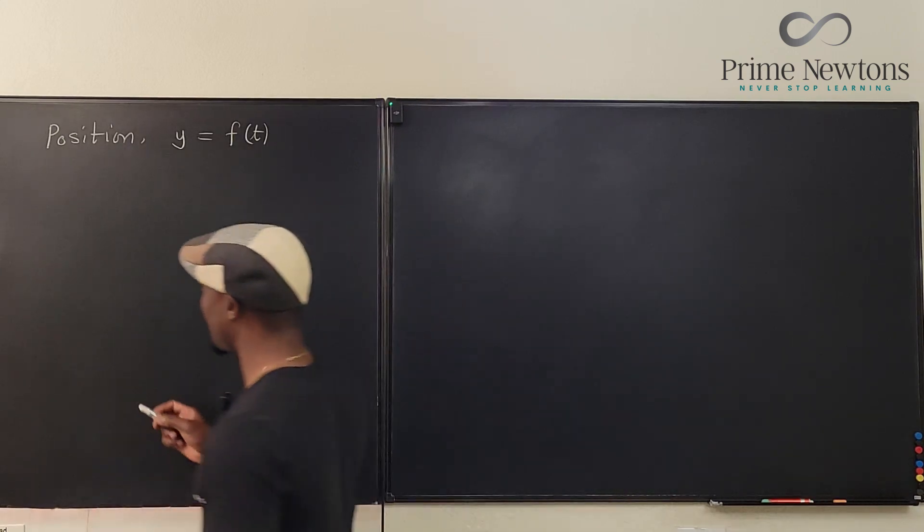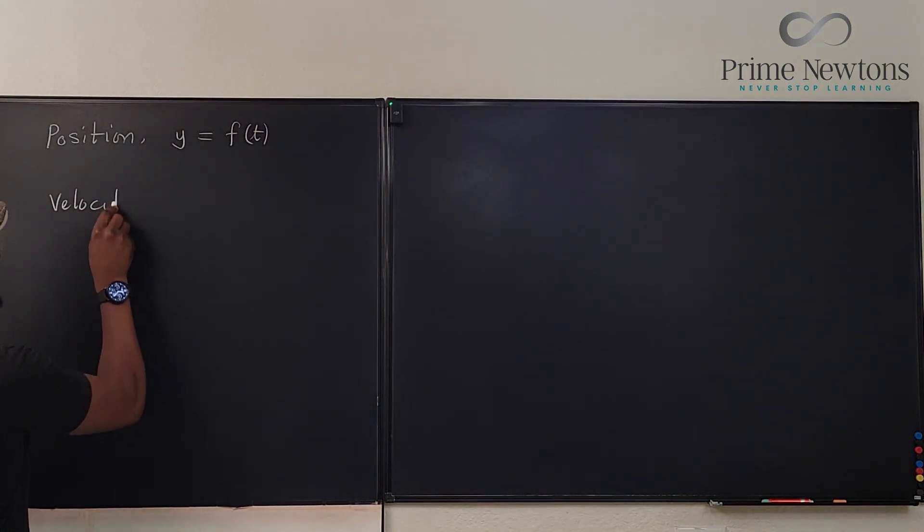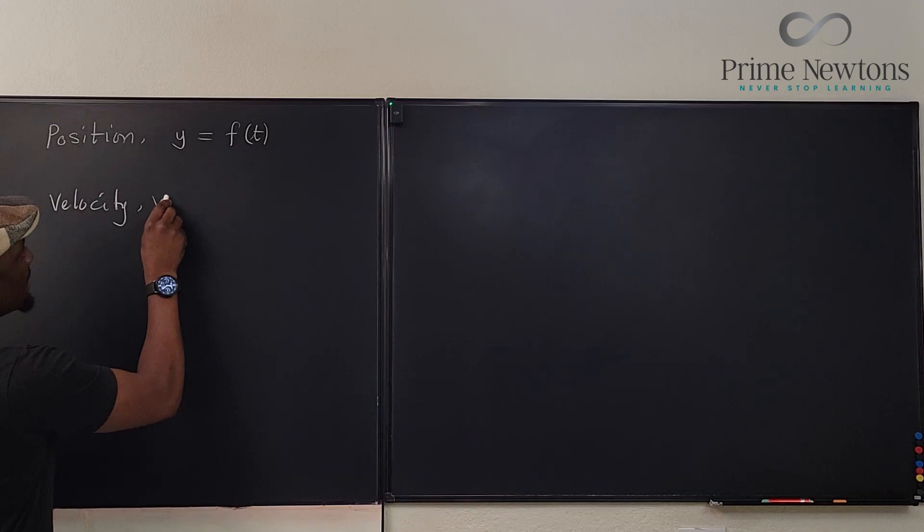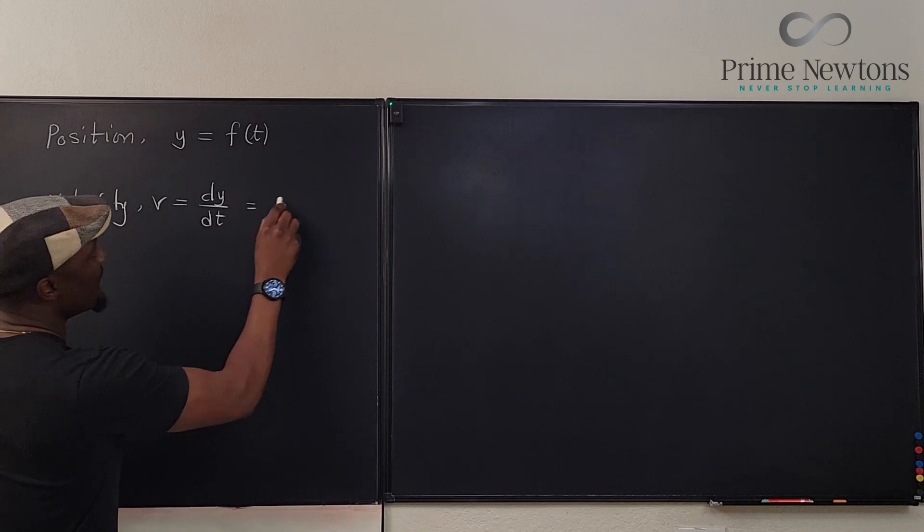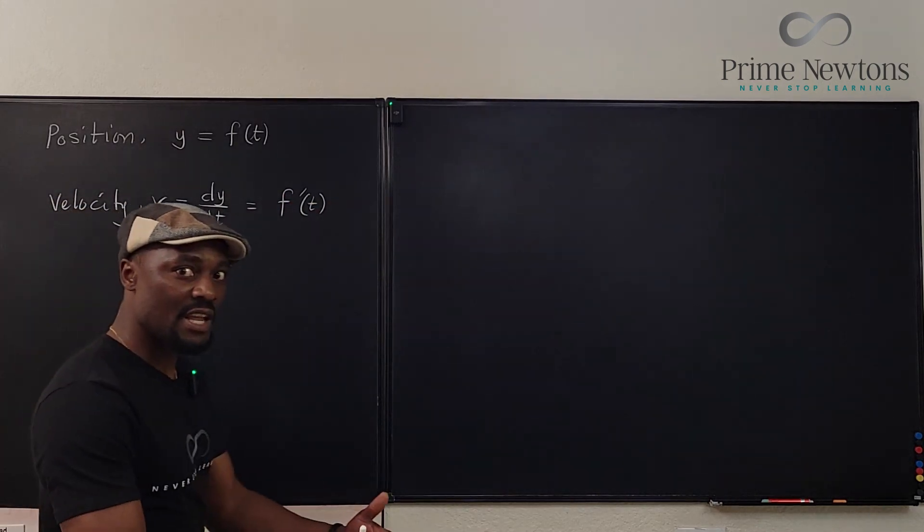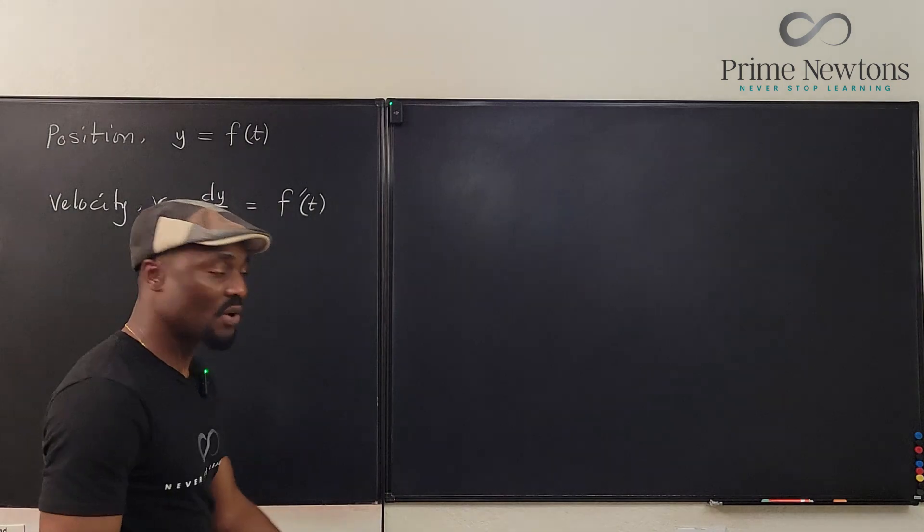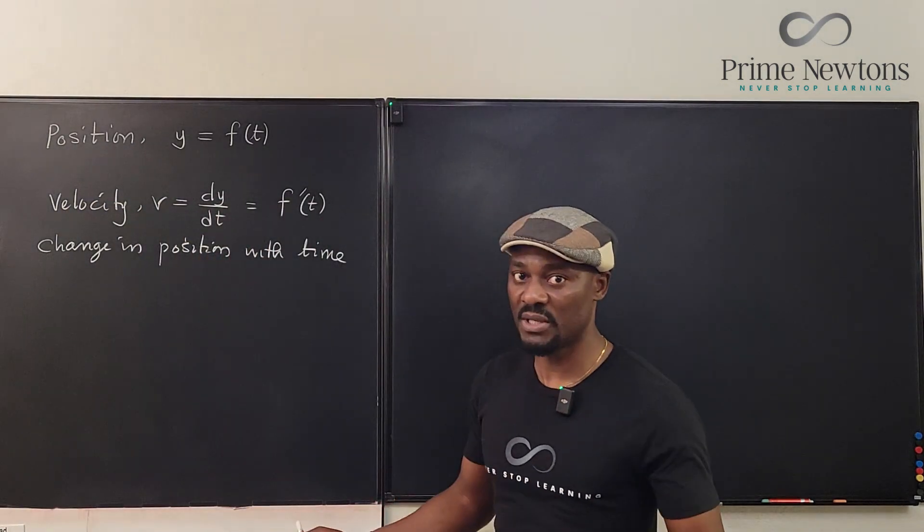So, the first one, like I said, is velocity. And the symbol for that is small letter v, and we say that that is equal to dy/dt, and it is f prime of t. And we call this the change in position with time, or we call it the rate of change. Another way you can say the rate of change of position.